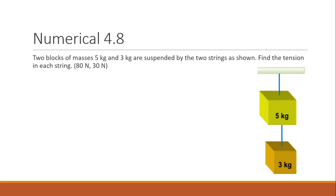Assalamu alaikum everyone. Today we will start numerical 4.8: two plots of mass 5 kg and 3 kg are suspended by two strings as shown in the figure. Find the tension in each string. To find the tension in the strings, we have to apply the principle of equilibrium — the sum of all forces should be equal to zero.